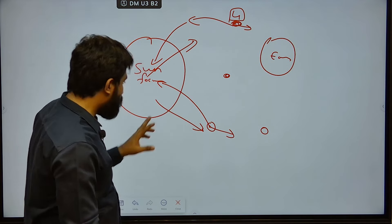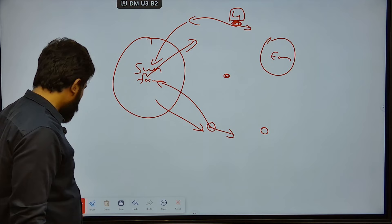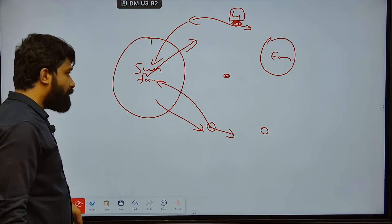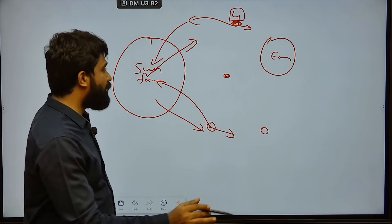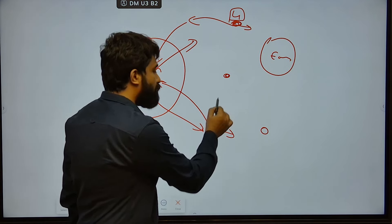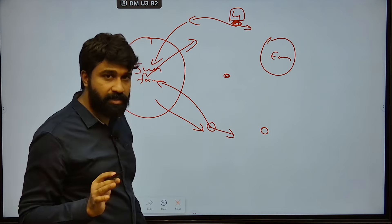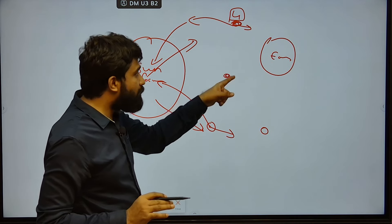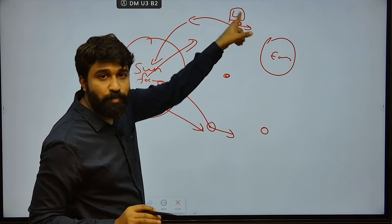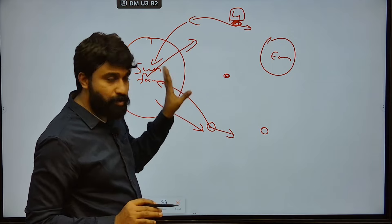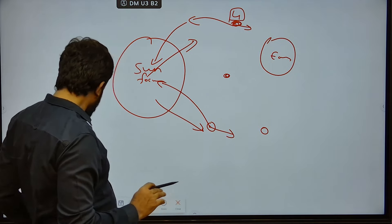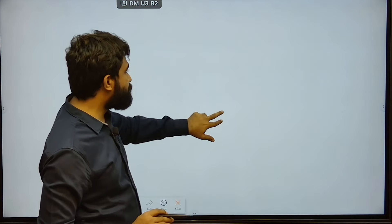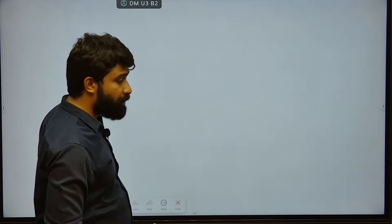There are 5 Lagrange points formed, and Aditya-L1 is going to Lagrange Point 1 — L1. This concept is now understood through MCQs.